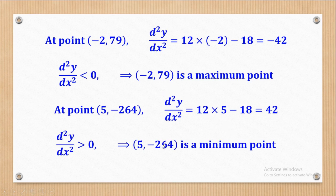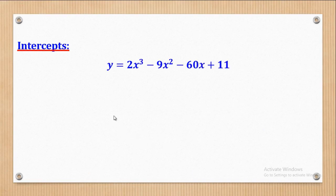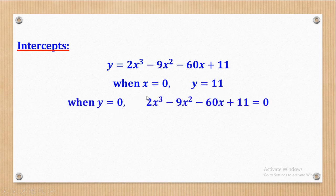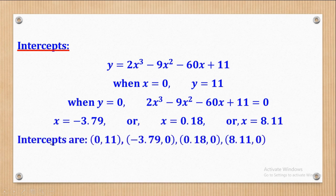Next is to get the intercepts. When x = 0, substituting gives y = 11, so the y-intercept is (0, 11). When y = 0, solving using a calculator gives x = −3.79, x = 0.18, and x = 8.11. Note we use two decimal places in curve sketching. So the intercepts are (0, 11), (−3.79, 0), (0.18, 0), and (8.11, 0).